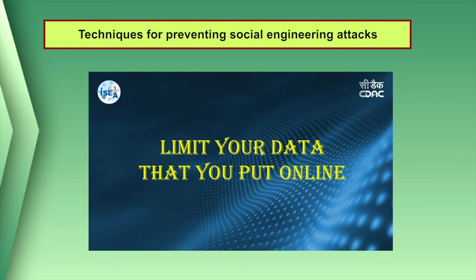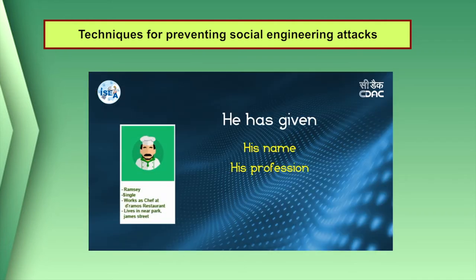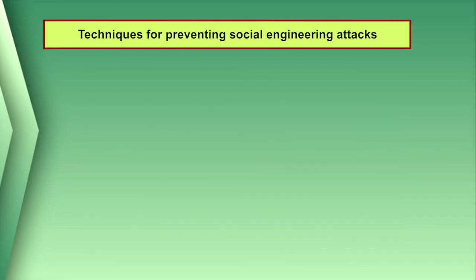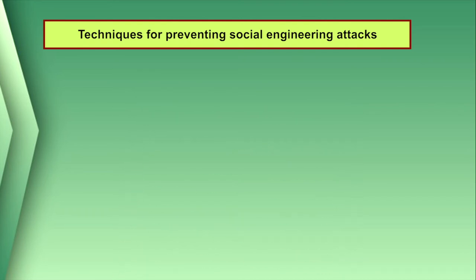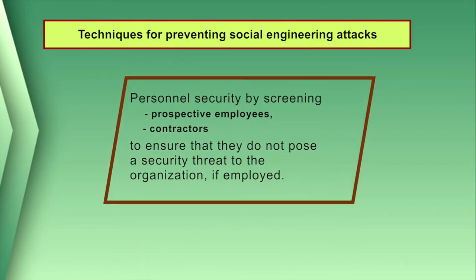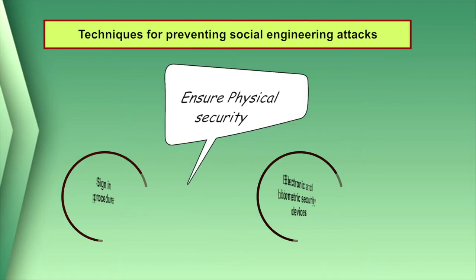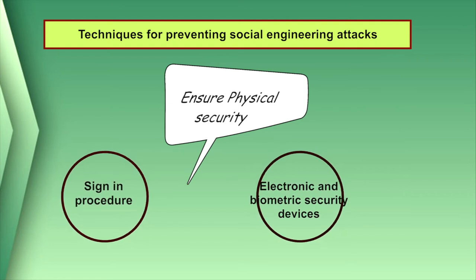Do not provide personal information or information about your organization — including its structure or networks — unless you are certain of a person's authority to have that information. Implement information classification and handling procedures for identifying critical information assets and related handling instructions. Ensure personnel security by screening prospective employees and contractors to ensure they do not pose a security threat to the organization. Ensure physical security to secure facilities from unauthorized physical access, with the help of sign-in procedures, electronic and biometric security devices, etc.